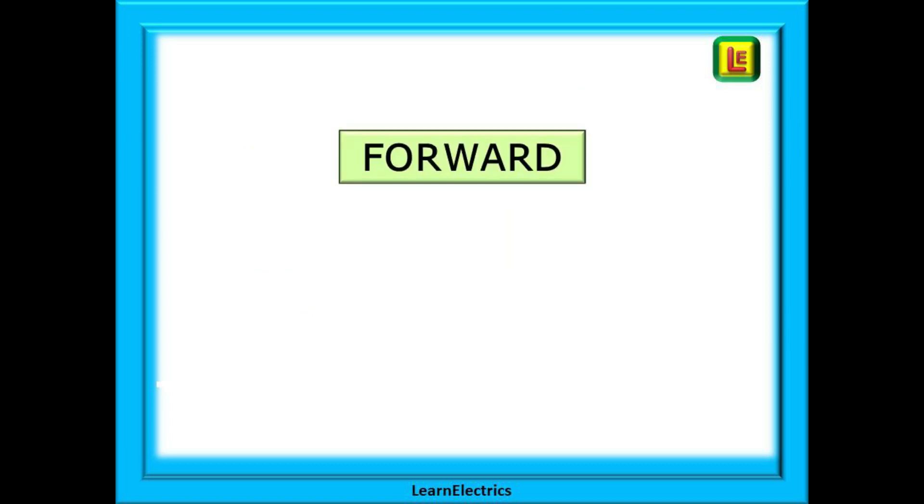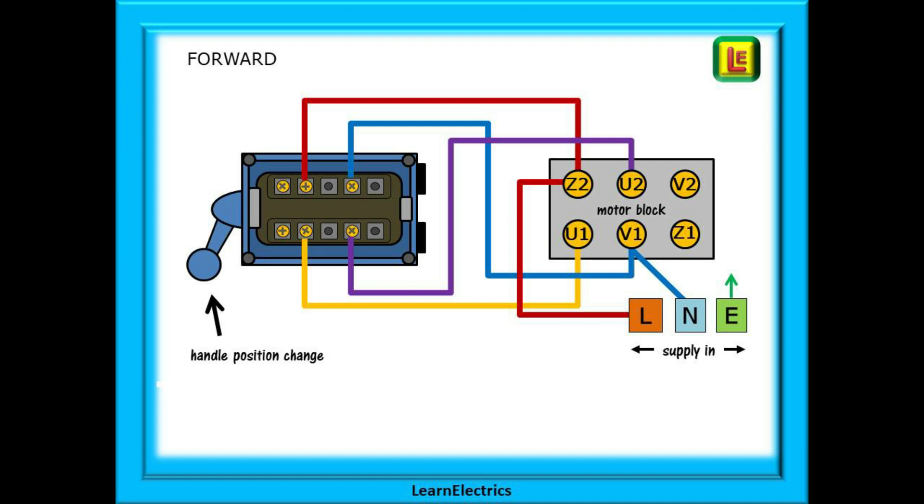Now what happens if we choose the forwards position? Visually the only change is that the selector arm has changed position. All the contact changes have taken place internally. If we could see inside the switch we would see that the straight through connections have been made as shown here by the dotted lines the internal connections. Phase connects to U1 and neutral to U2 and hopefully the motor turns in the forwards direction.